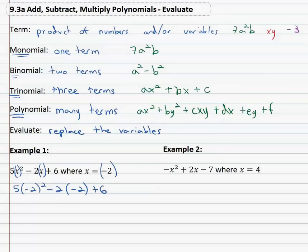Now we can simply evaluate order of operations, do the exponent first, so we have 5 times negative 2 which is 4, negative 2 squared minus 2 times negative 2 plus 6.